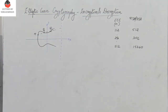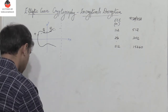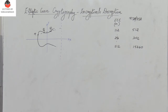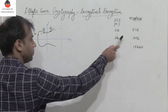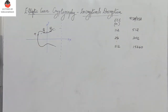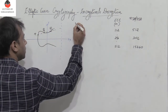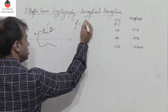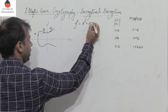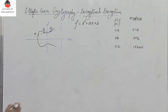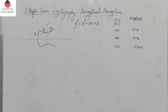Elliptic curve cryptography is an asymmetric cryptography or a public key cryptosystem, and it provides a very high level of security using a reduced number of keys. The general form of any elliptic curve is y² = x³ + ax + b, which is the general cubic equation we consider.